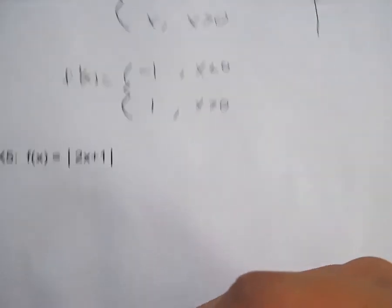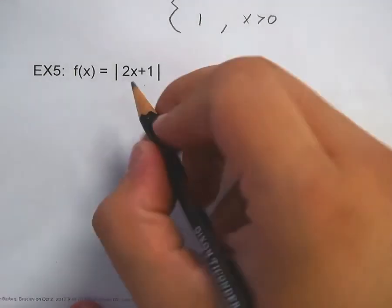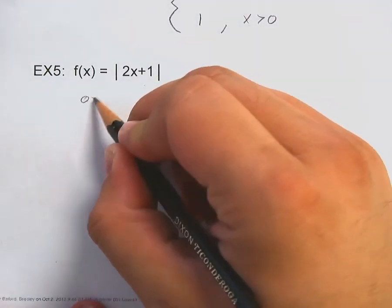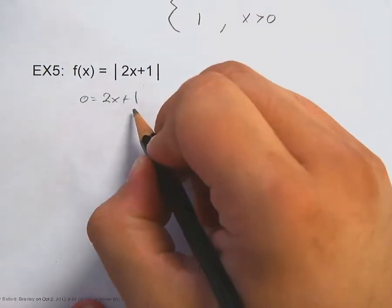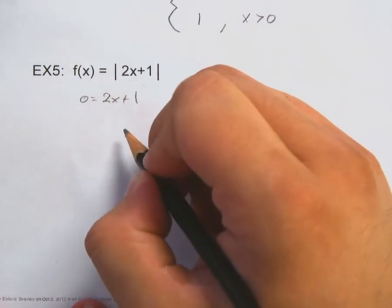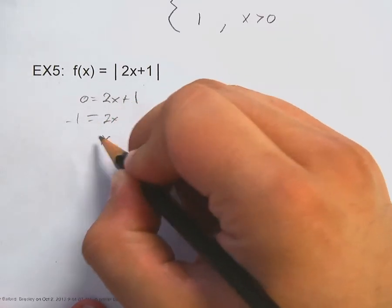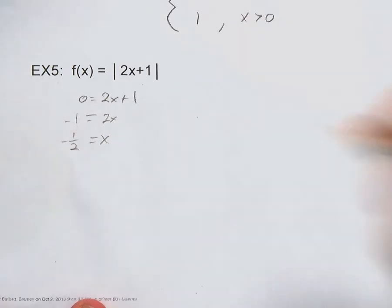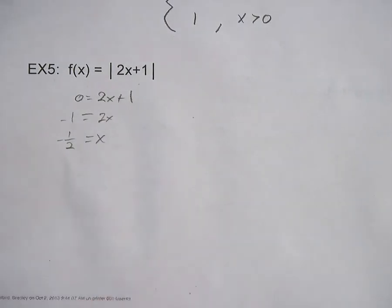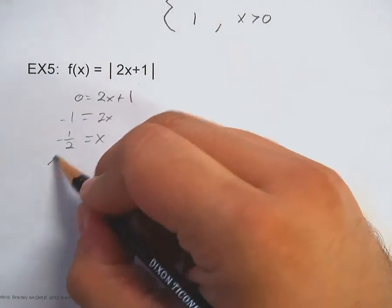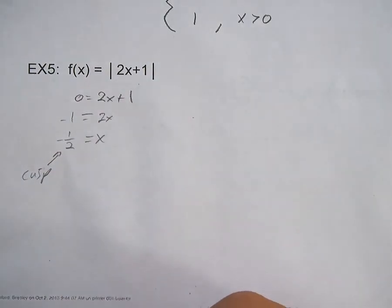Again, set the inside to zero and it tells you where the division happens. For example number five, set the inside to zero: move the one over and you have two x equals negative one, divide by two, and x equals negative one half. That tells you the cusp is at x equals negative one half.